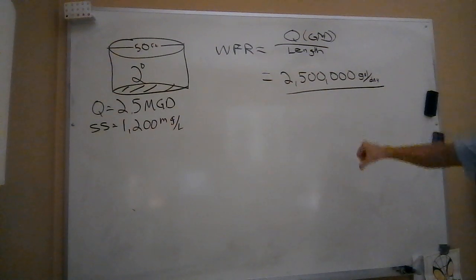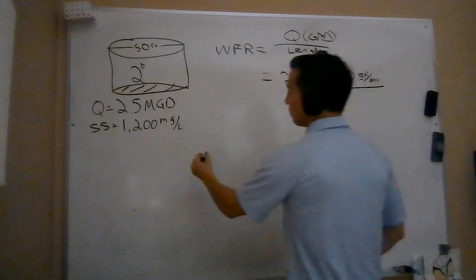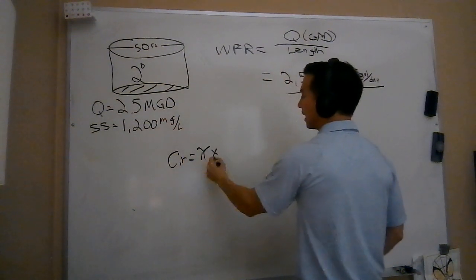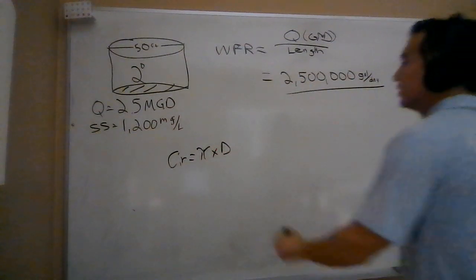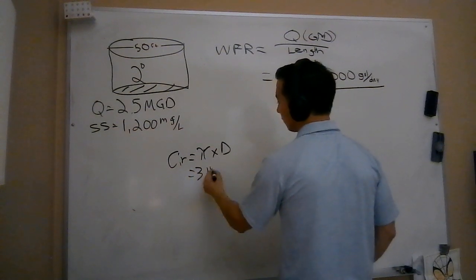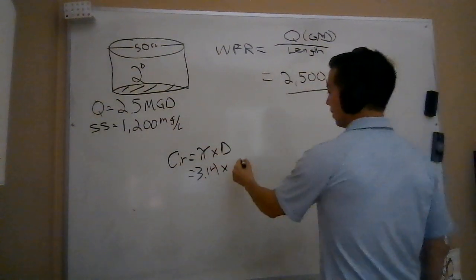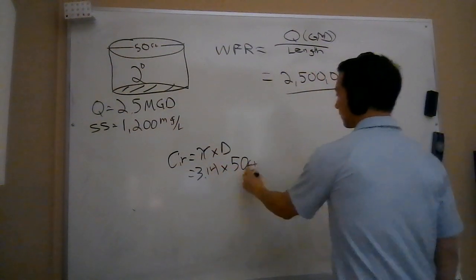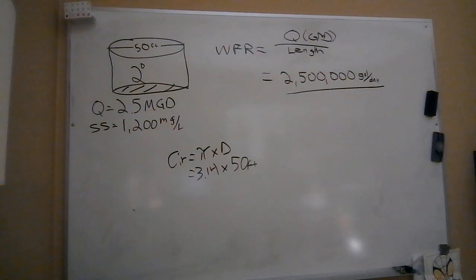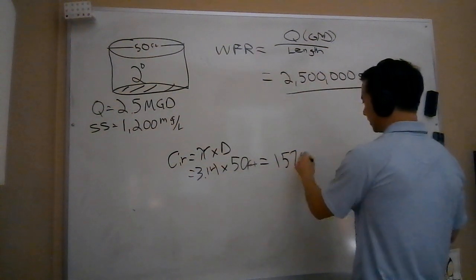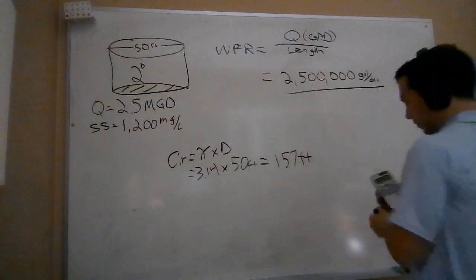Now I'm not directly given the length. If I plug in 50, that's going to be very wrong - that's the diameter. So I need to remember that the circumference of a circle is pi times diameter. A lot of times in wastewater math we just use 3.14 for simplicity. In this case, I have a diameter of 50 feet. So if I do 3.14 times 50, I get to 157 feet of weir. Notice those units - it's feet, not square feet. We're dividing by a length.